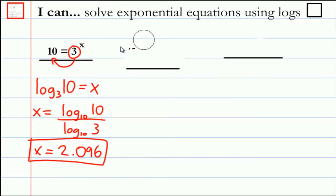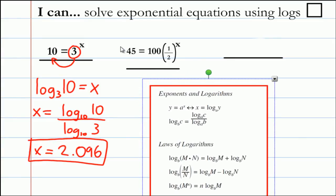In this next example, 45 equals 100 times one half to the power of x. If you want to convert this exponential form to logarithmic form, notice on your formula sheet this exponential form doesn't have anything in front of the exponent base. This one does, so we need to do something about that.